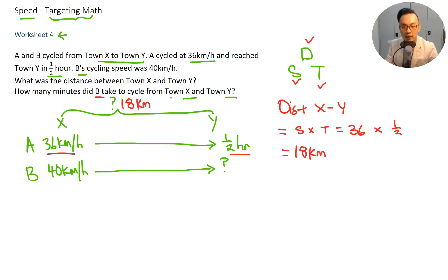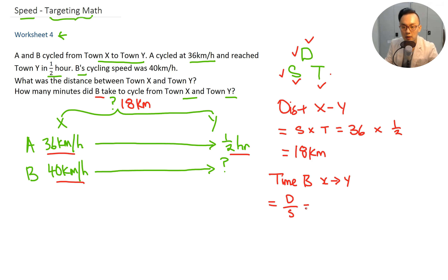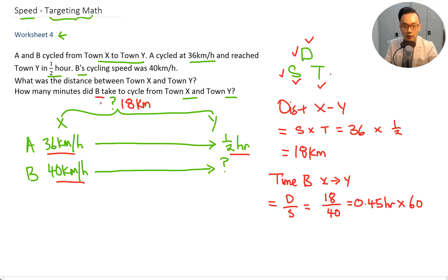How many minutes did B take to cycle from X to Y? We have the speed of B and the distance, so we can find the time. Time of B from X to Y equals distance over speed, which is 18 over 40, equals 0.45 hours. Multiply by 60 to get minutes, which equals 27 minutes.